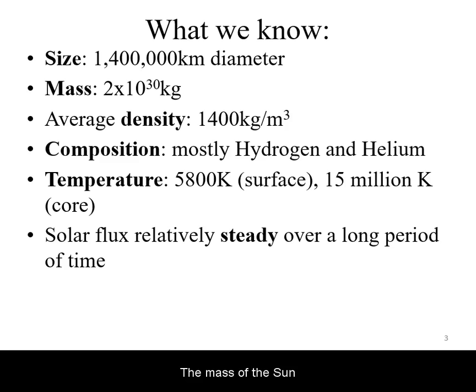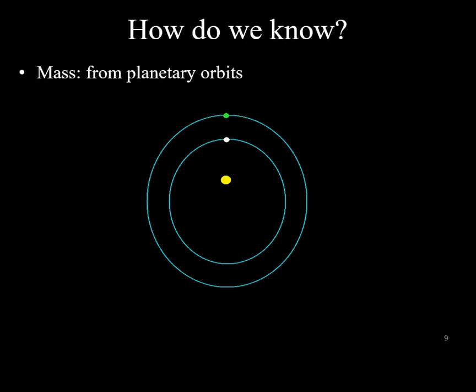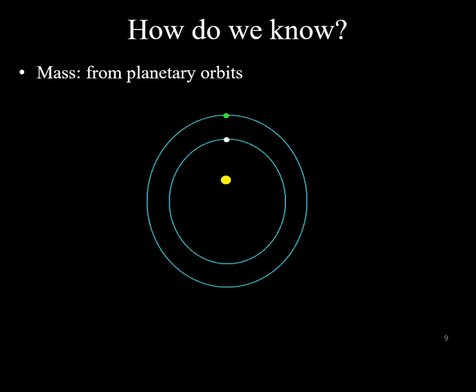The mass of the Sun is over 300,000 times that of Earth. This we can calculate from knowing the Sun's gravity. The Sun's gravity can be deduced from the orbits of planets around it.